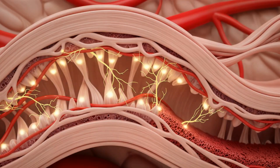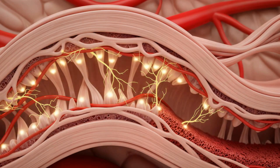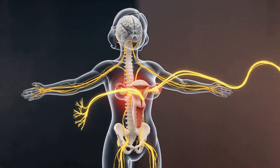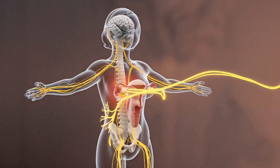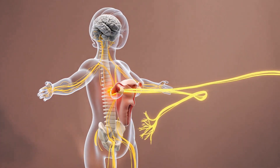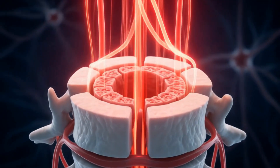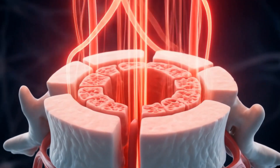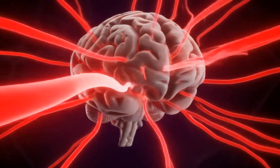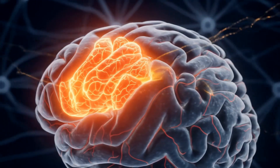The uterine tissue is rich in nociceptors, specialized nerve endings that detect pain. When these nociceptors are activated by the ischemia and tissue damage from contractions, they send impulses through the pelvic and hypogastric nerves to the spinal cord. From the spinal cord, these pain signals ascend to various parts of the brain, including the thalamus and cortex, where the sensation of pain is processed and interpreted.